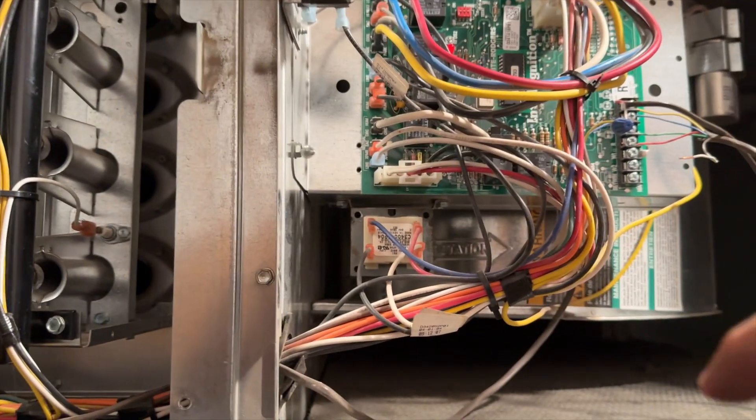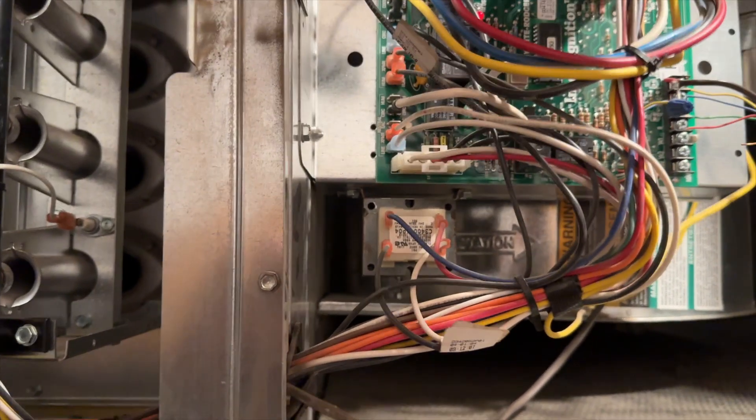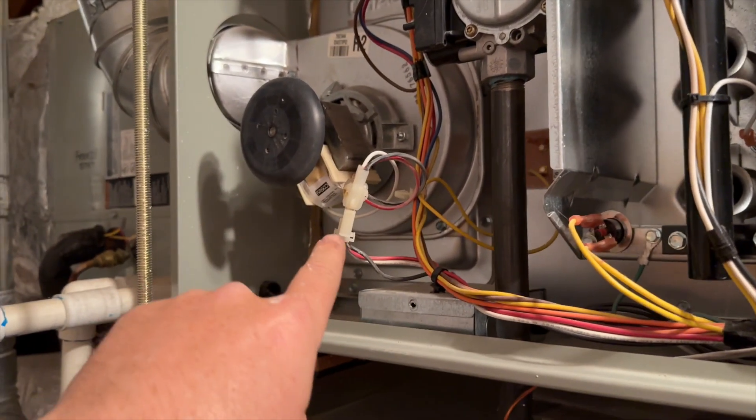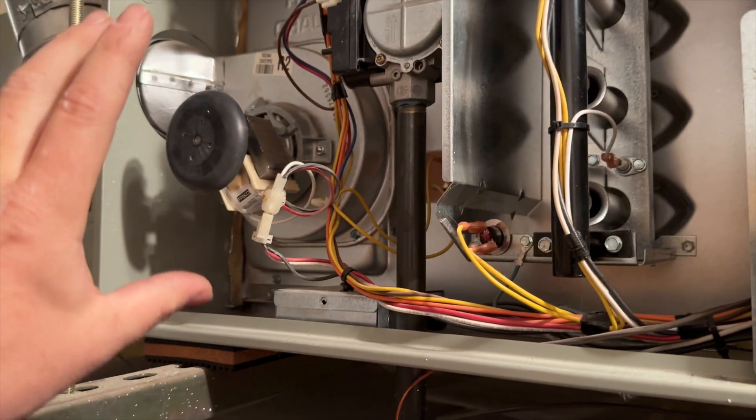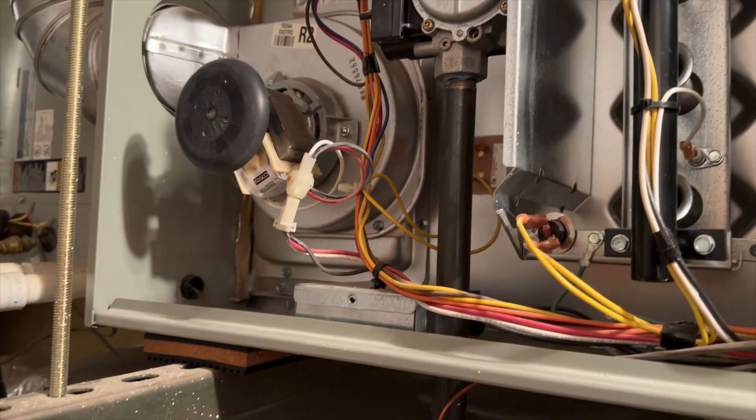So we're going to go ahead and try tapping on some stuff, see if we can tap it loose. So what I'm going to do is I have this unplugged and then I'm going to call for heat and then I'm going to close it and then see if it continues. If it does, then that means our pressure switch is good.